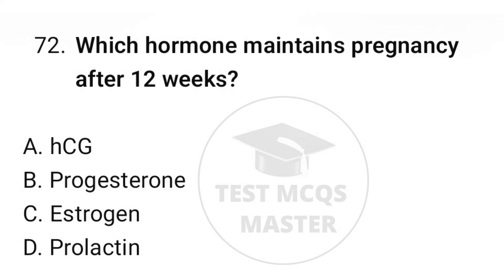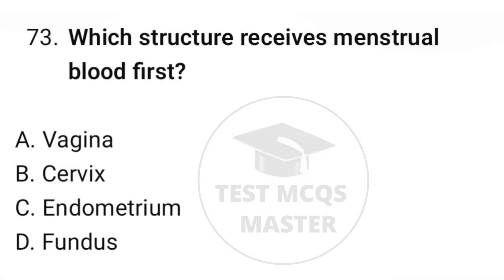Question number seventy-two: which hormone maintains pregnancy after 12 weeks? The correct option is B, progesterone. Question number seventy-three: which structure receives menstrual blood first? The correct option is B, cervix.